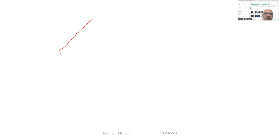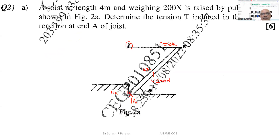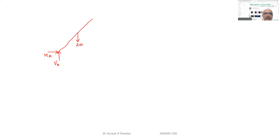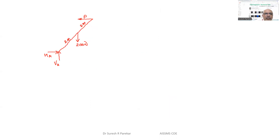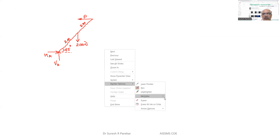Drawing the free body diagram: we have V_A, horizontal reaction H_A, and weight 200 Newtons at 2 meters. The remaining 2 meters leads to force P from the cable. The angle given is 45 degrees. So the cable makes 45 degrees with the joist.